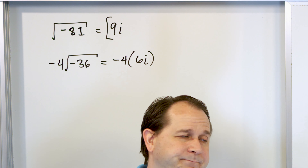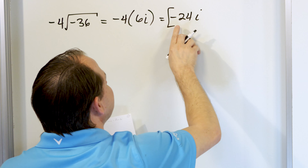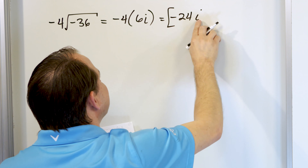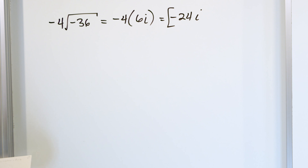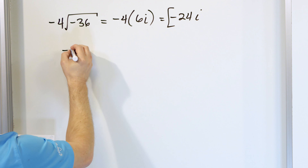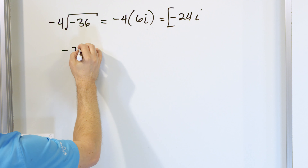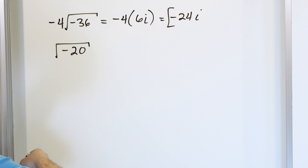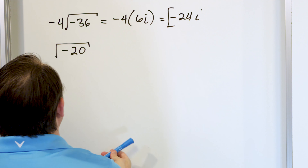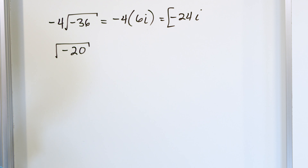If you have negative 81, and we're going to take the square root of that, what you do is completely ignore the negative sign at first and take the square root of the number. The square root of 81 is 9. You could do a factor tree, 9 times 9 and circle a pair, but you know it's 9. Then because of the negative, you're also taking the square root of negative 1, which is i, and it lives right behind the number. So the answer is 9i — a pure imaginary number, 9 times bigger than the base imaginary number.